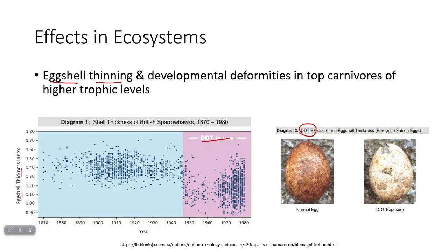You can actually see a visible difference in peregrine falcon eggs — normal eggs compared to those from birds exposed to DDT. This caused a dramatic reduction in populations of some top predator bird species because their death rate was increasing.